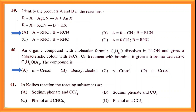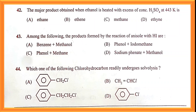Question number forty: metacrolein is the correct answer. Question number forty-one: sodium phenate and CO₂ is the correct answer — option B. Question number forty-two: the major product when ethanol is heated with excess concentrated sulfuric acid at 443 K is ethene. Option B is the correct answer. Questions forty-three and forty-four: option A is the correct answer for both.